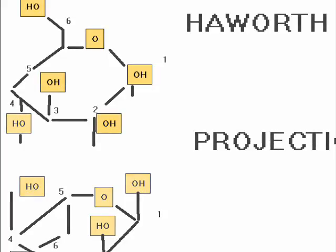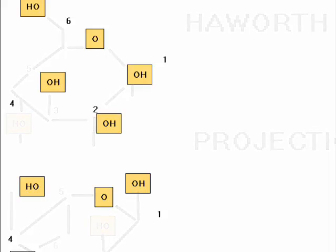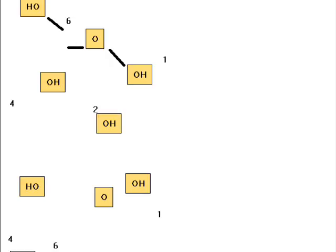The groups below the plane of the ring in Haworth projections correspond to those on the right-hand side of a Fischer projection. This rule does not apply to the groups on the two ring carbons bonded to the endocyclic oxygen atom.